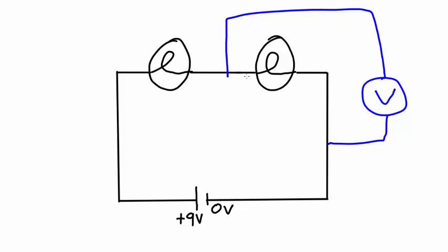If I wanted to measure the potential difference across both the light bulbs, I would connect my voltmeter like this. Now it's measuring the difference in potential between this point in the circuit and that point in the circuit, which would be 9 volts.